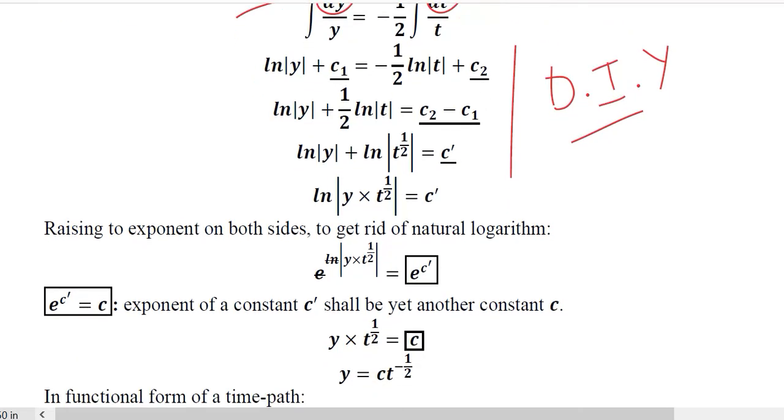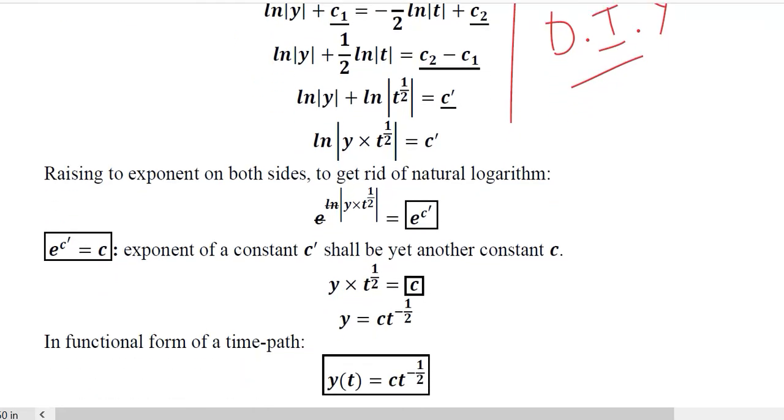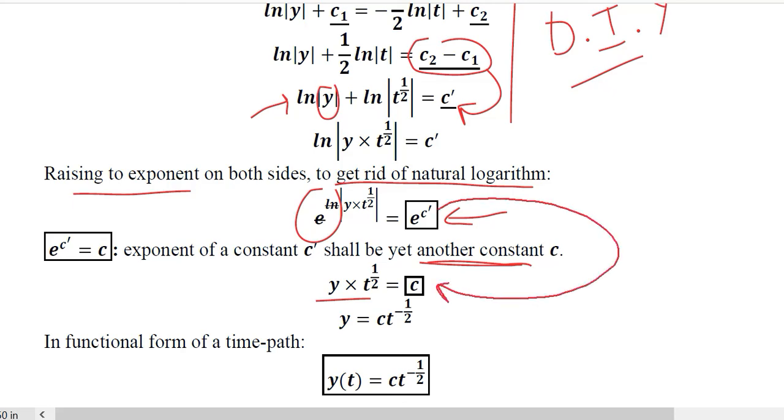The only slight difference here is that after the difference of these two constants of integration, we have c̄. When we try to get the value of y, it is with ln. So to get rid of the natural log, we take the exponent. The exponent gets rid of the natural log and we get y in the base: ln|y| + ln|t²| = c, then ln|y × t²| = c. When we take the exponent of a constant, the answer will be another constant because it is not going to convert it into any variable.